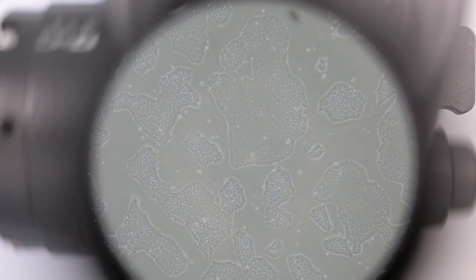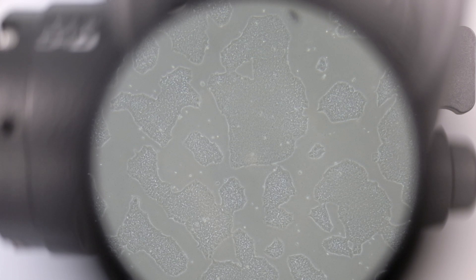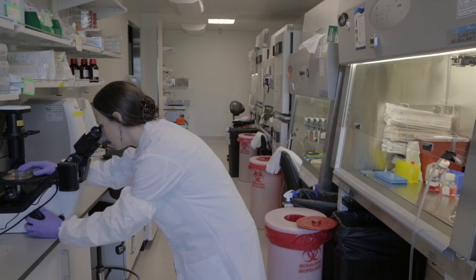I'm looking for smooth, flat colonies with nice, smooth, round edges. And these look really nice. They're at about 70-75% confluent, so I think we're ready to go.